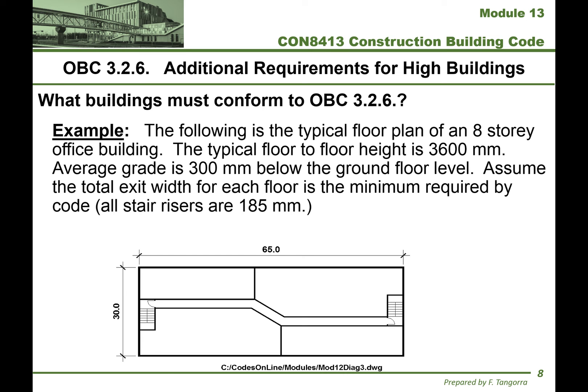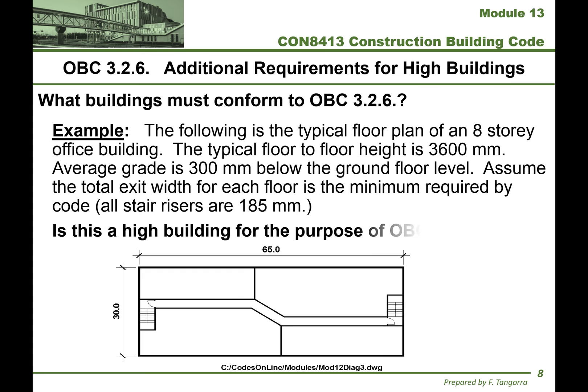Average grade outside is 300 millimeters below the ground floor level. Assume the total exit width for each floor is the minimum required by code, with stair risers at 145 millimeters. This last sentence refers to exit widths, which we've learned how to calculate under modules 11 and 12. We need to figure out whether, according to 3.2.6, this building is considered a high building. The floor plan measures 65 meters long by 30 meters wide and has two exits for the public corridor.